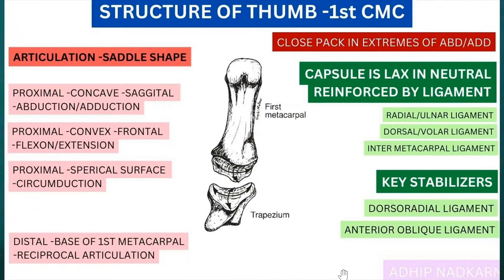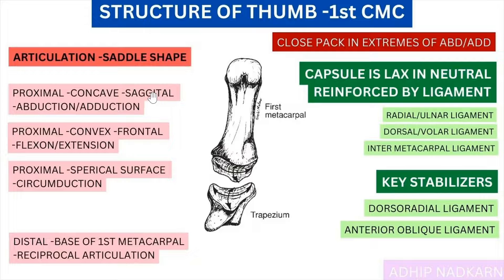Hello guys, this is Adib. Welcome to my channel Movement Science, where I simplify biomechanics with Joe. If you are new to this channel, consider subscribing. In this video today we are going to cover the structure of your first CMC joint, or the thumb CMC joint. We will start with the saddle shape articulation, look at the proximal and distal articulation, then the capsule and ligaments — that covers the structure. Then we will move on to the function: range of movement, axis, and other features of the first CMC joint.